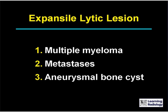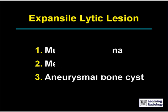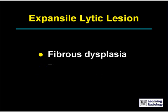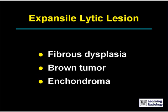The major causes of an expansile lytic lesion in bone include multiple myeloma, metastases, aneurysmal bone cysts, fibrous dysplasia, brown tumors, and enchondroma.